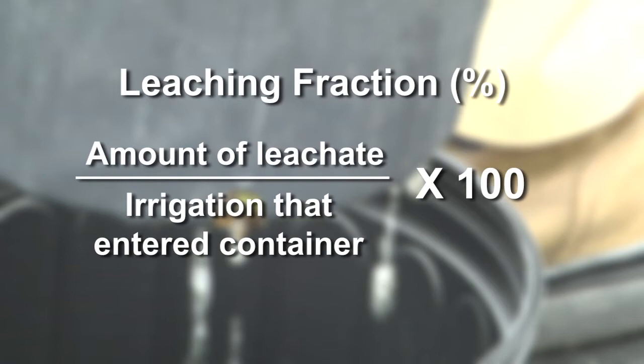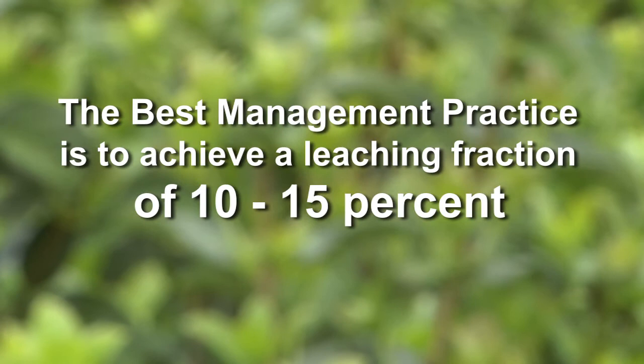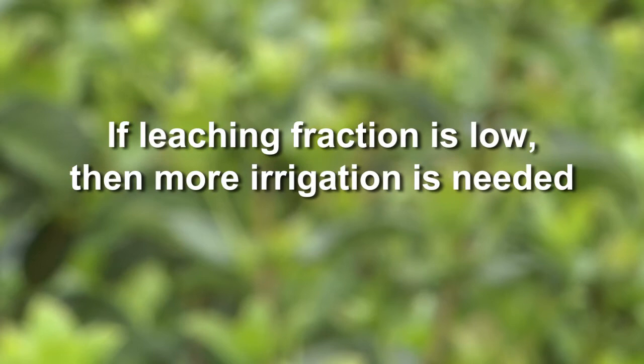Some important things to consider: the best management practice is to achieve a leaching fraction of 10 to 15 percent. If leaching fraction is low, then more irrigation is needed. If leaching fraction is high, then less irrigation is needed, but ensure the container substrate was not too dry when plants were irrigated.